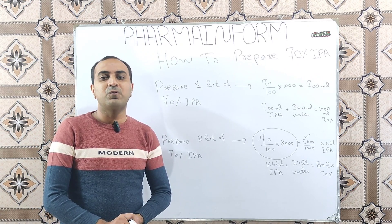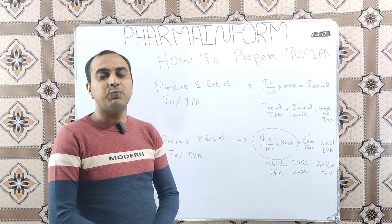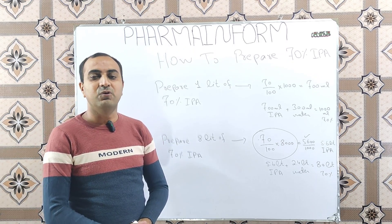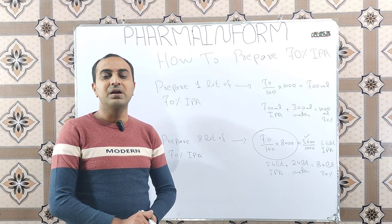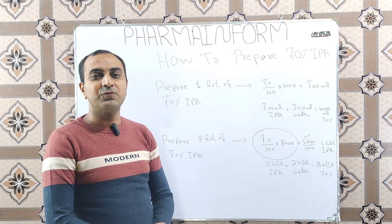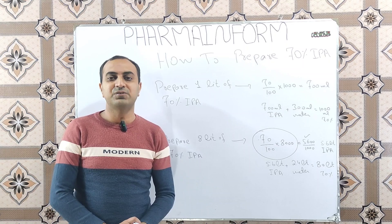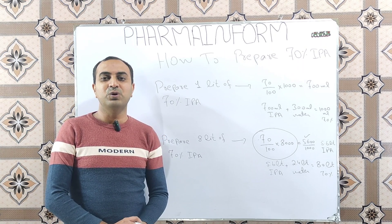So, give the answer in comment box. If we want to prepare 15.7 liters of 70% IPA, what will be the quantity of water and what will be the quantity of isopropyl alcohol? If you like the video, share it to others and subscribe my channel. Till the next video, Allah Hafiz.